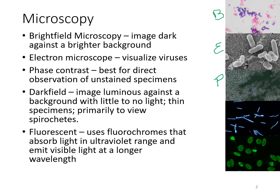A dark field microscope produces an image that is luminous against a background with little to no light. This is primarily for thin specimens and to view spirochetes — you can see that corkscrew design of those organisms. A fluorescent microscope uses fluorochromes that absorb light in an ultraviolet range and then emit visible light at a longer wavelength. Fluorescent microscopy is used for something like your ANA, where you can see different pattern staining with your cells.